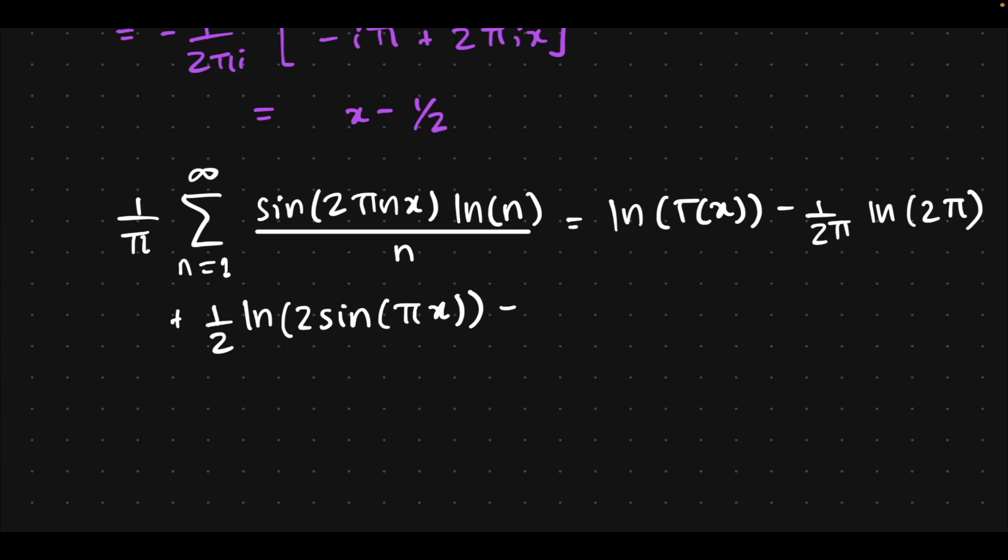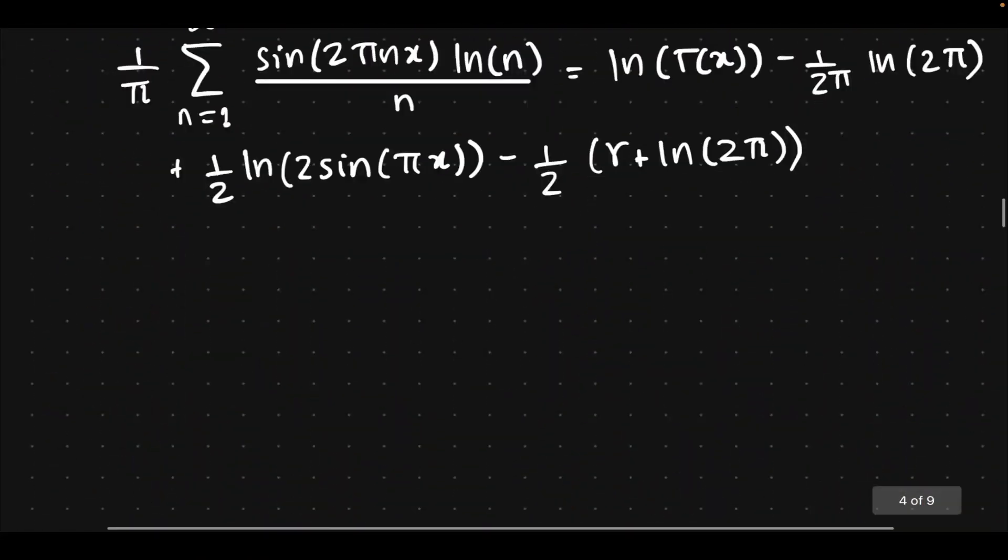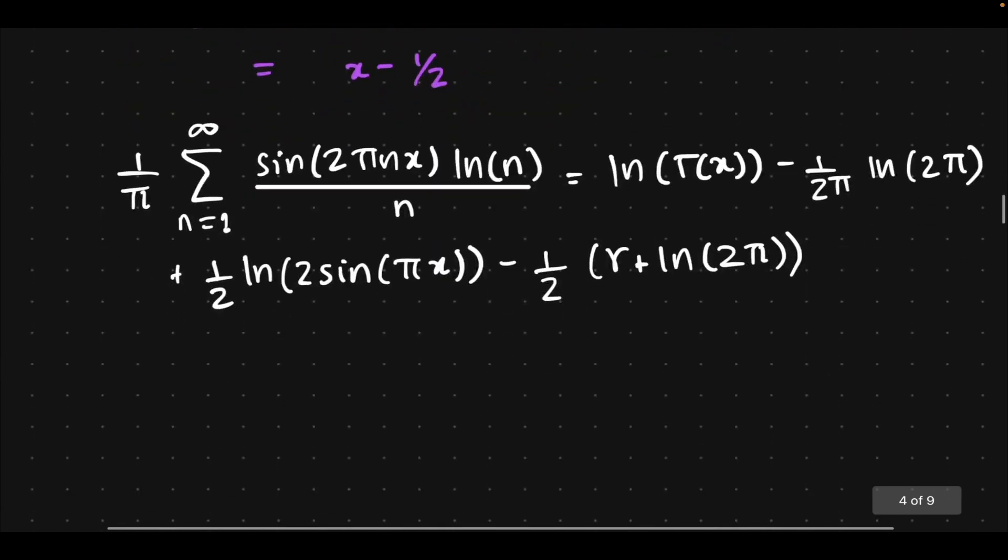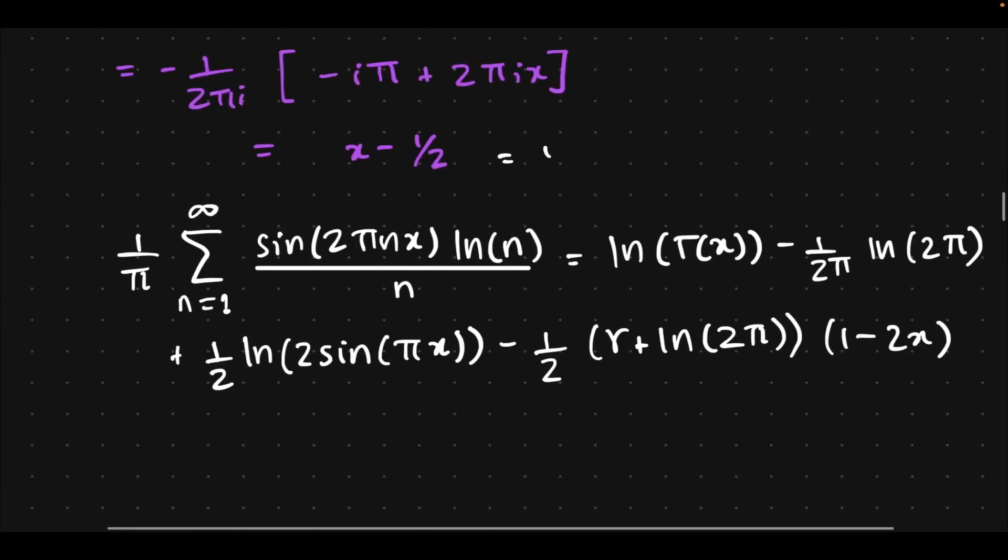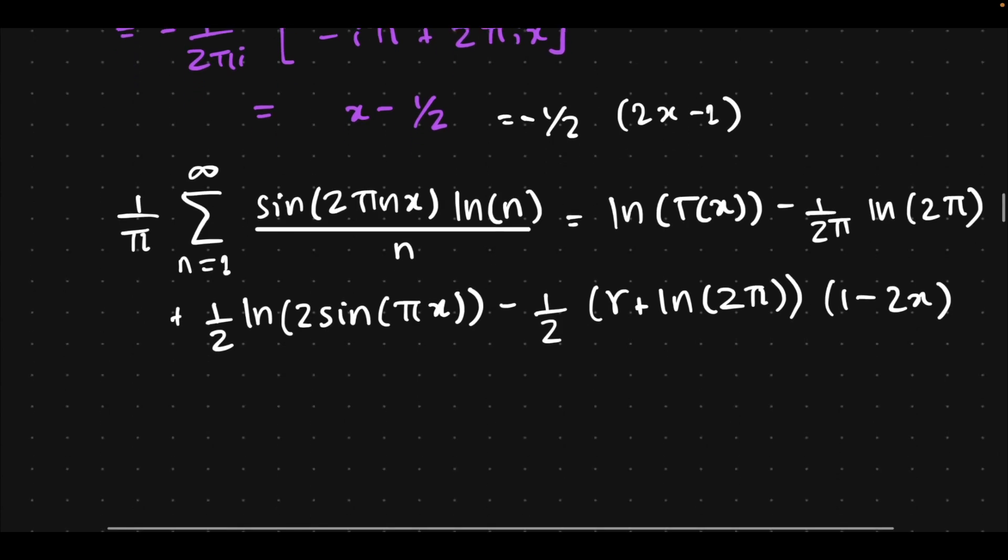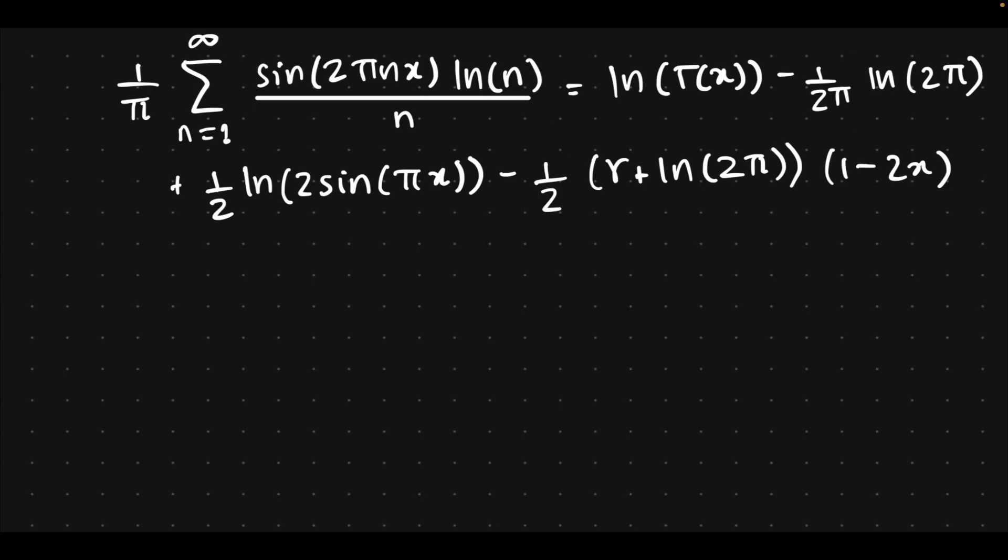Is natural log of gamma of x minus 1 over 2, ln 2π, plus one-half natural log of 2 sin πx—I'm writing the non-infinite series terms first of the right-hand side—minus (Euler-Mascheroni plus natural log of 2π), because both of them were sort of multiplied with the individual S₁ series. Times S₁, but we know the value of S₁ is going to be 1 minus 2x, because we already took the one-half outside.